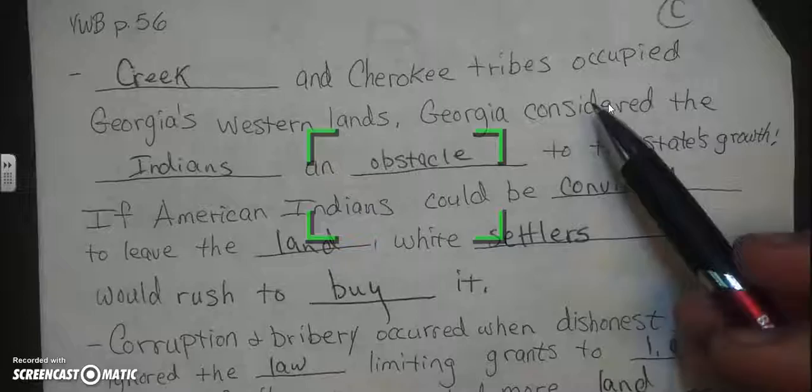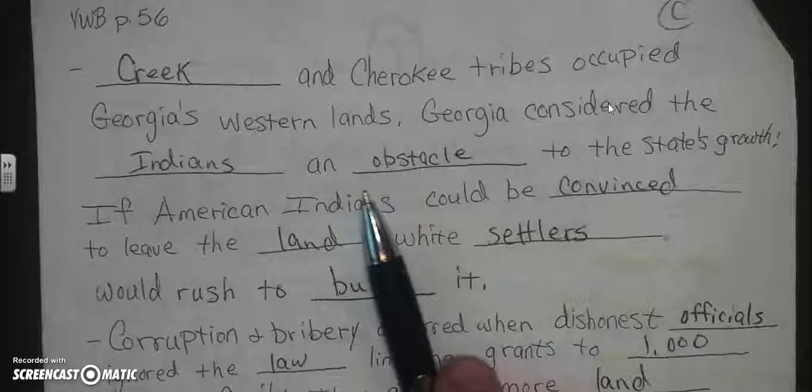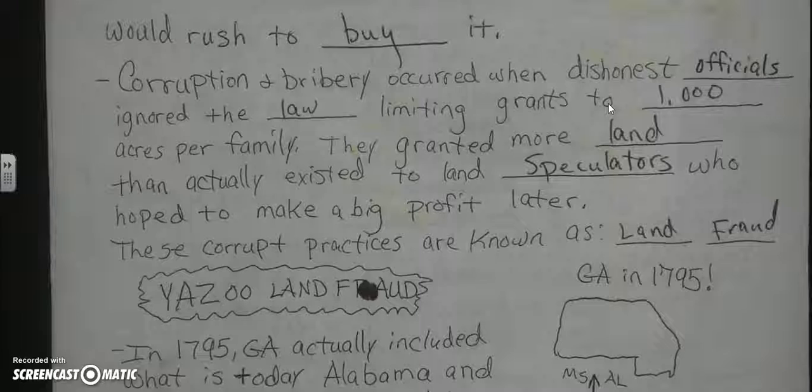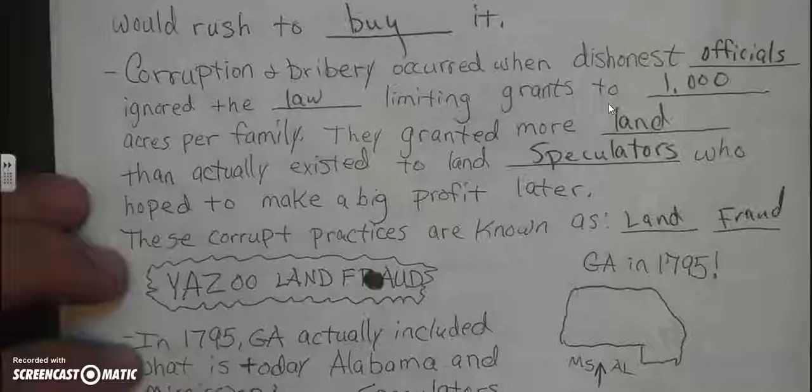Creek and Cherokee tribes occupied Georgia's western lands. Georgia considered the Indians an obstacle to the state's growth. If American Indians could be convinced to leave the land, white settlers would rush to buy it. Corruption and bribery occurred when dishonest officials ignored the law limiting grants to 1,000 acres per family — they granted more land than actually existed to land speculators who hoped to make a big profit later. These corrupt practices were known as land fraud.